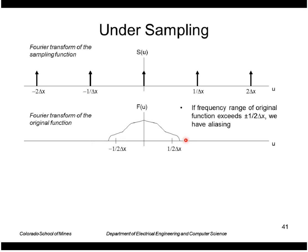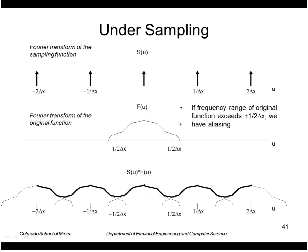This will cause problems when we reconstruct. When we convolve the transform with our sampling function, namely we're sampling.